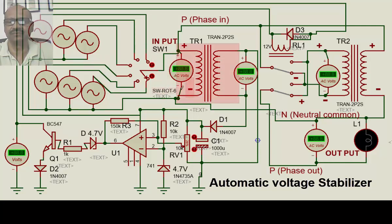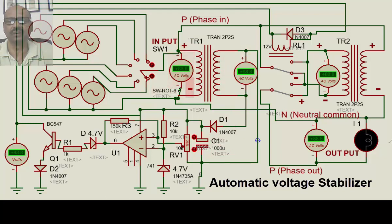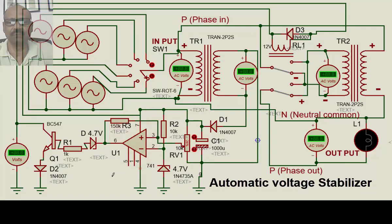We have a small transformer called a signal transformer, which is only for powering the electronic circuits. The primary is connected to the supply — 230 volts or whatever voltage is coming in — and the secondary is around 12 to 15 volts, which is then rectified and filtered into DC, and that DC is given to an operational amplifier used as a comparator.